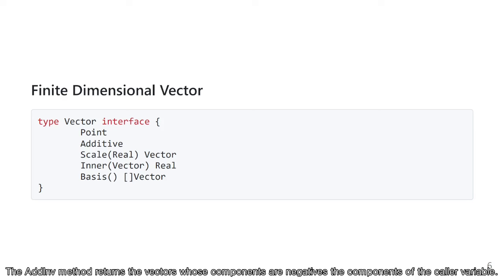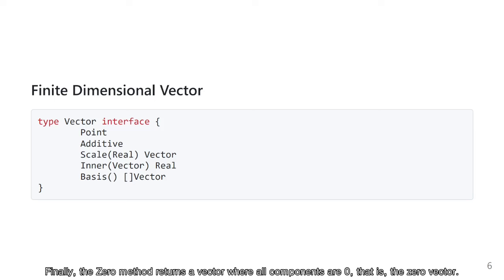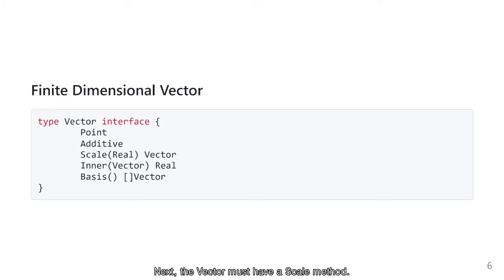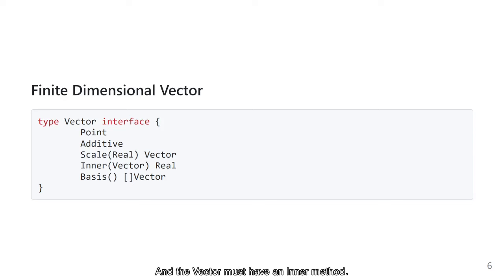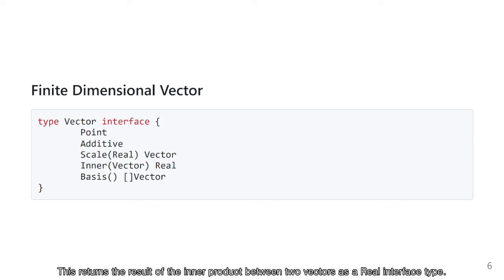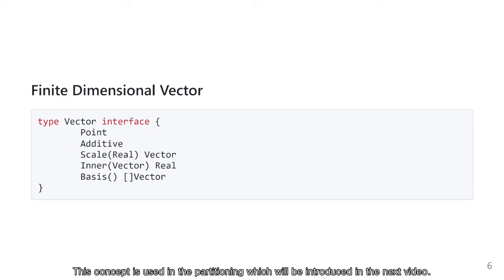The addin method returns the vector whose components are the negatives of the components of the caller variable. The zero method returns the vector where all components are zero — that is, the zero vector. Next, the vector must have a scale method, which returns the scalar multiplication of the vector. The vector must also have an inner method, which returns the result of the inner product between two vectors as a real interface type. Finally, bases returns a slice of basis vectors used to express the vector as a linear combination. This concept is used in the partitioning introduced in the next video.